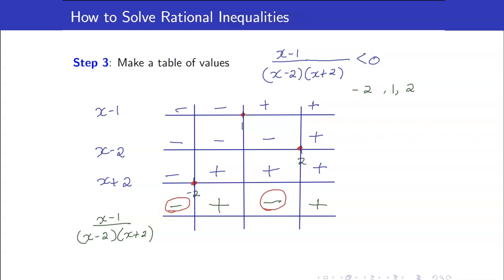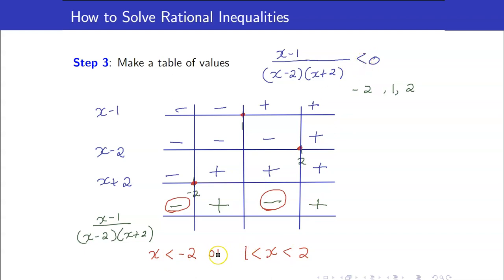Going back to our inequality, we want values for which the expression is less than 0 — we want negative intervals. The first is to the left of negative 2, so x is less than negative 2. The second is x between 1 and 2. Note that I do not include equalities because this is strictly less than 0. In interval notation: negative infinity to negative 2, union 1 to 2.